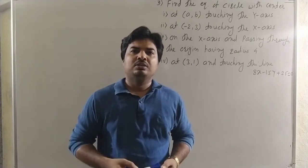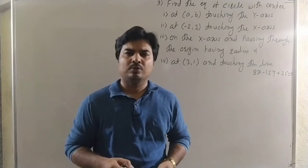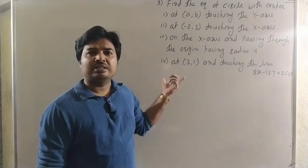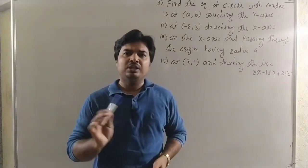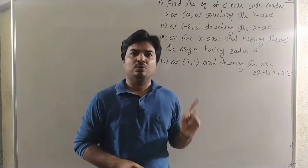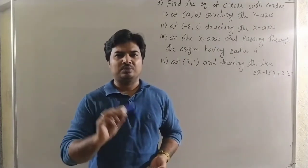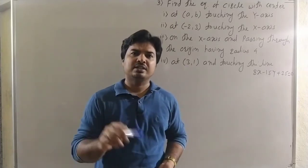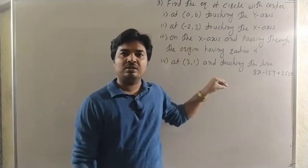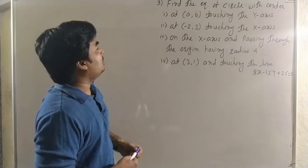Hello students. In the last two lectures we saw the equation of circles: equation of circle in standard form, center-radius form, and diameter form, with some examples in Exercise 6.1. Now we continue the examples in Exercise 6.1. To find the equation of a circle, we need to know the center and radius, then we write it in center-radius form: (x - h)² + (y - k)² = r², where (h, k) is the center and r is the radius.